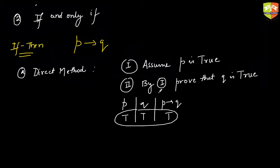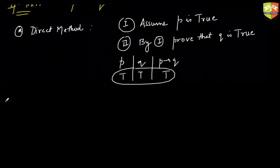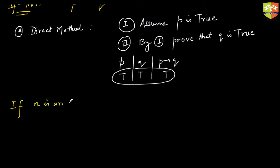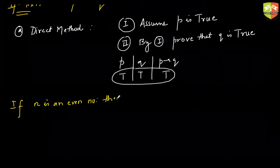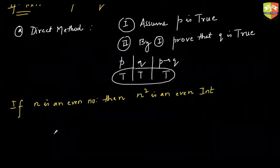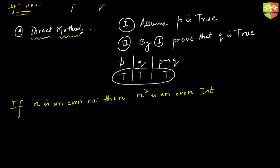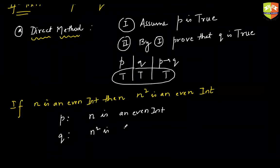Let me give you an example. If n is an even number, then n² is an even number. Or you can say even integer. Now let us say we want to use our direct method to validate this if-then statement. So when you're doing this, always first mention what are you calling as P and what are you calling as Q. What is P here? P is basically n is an even integer. And what is your consequent? n² is an even integer. Keep it as simple as possible.